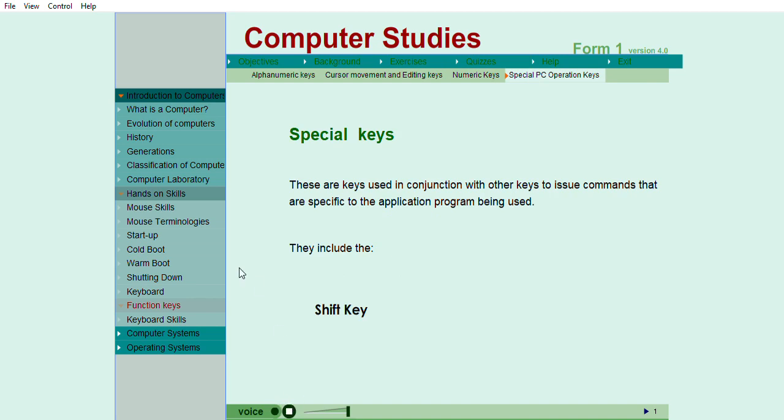Four, special computer operation keys: Keyboards have many special keys that let you complete more tasks per key. These are used in conjunction with other keys to issue commands that are specific to the application program being used. They include the Shift key, Control key or CTRL, and the Alternate key or ALT.